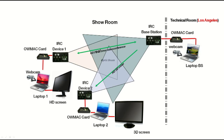Here you can see a picture of the infrared wireless communications demonstration. In the demonstration there is a base station and two terminals, which together provide wireless communication for video conferencing and video streaming. The base station is connected to IRC device one, which has a webcam and a video screen to send and receive video via the infrared link. The base station is also connected to another video conferencing terminal in the technical room — this terminal could be anywhere in the world. At the same time, the base station sends a high-definition 3D video to IRC device two, which displays it on a 3D screen.